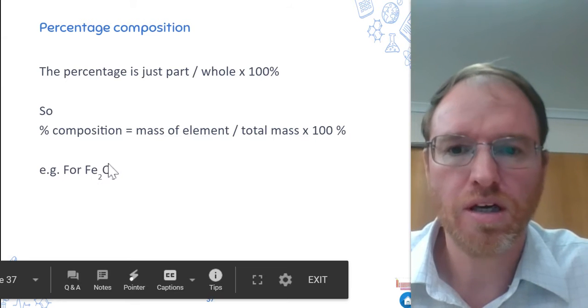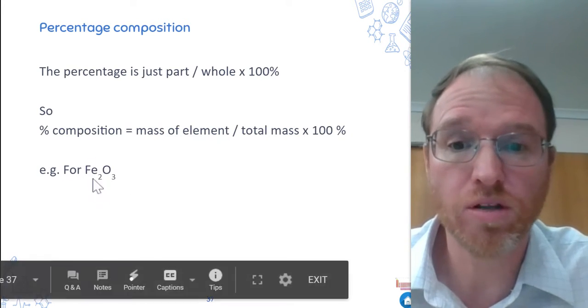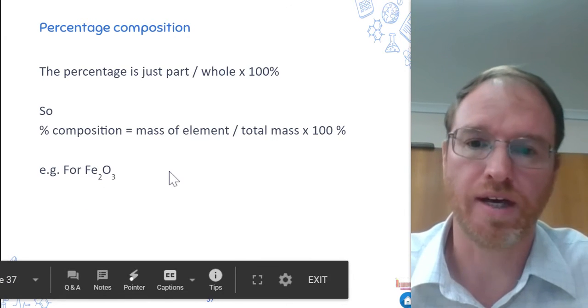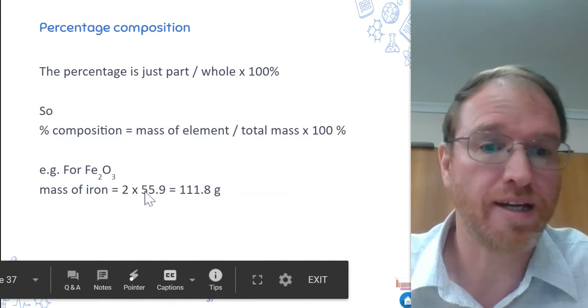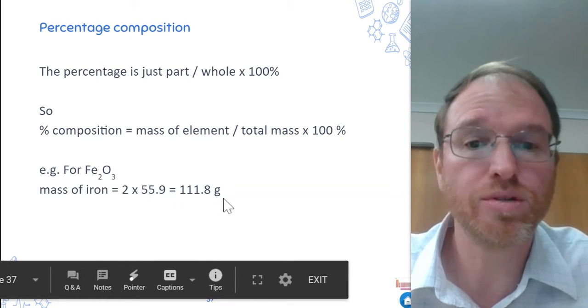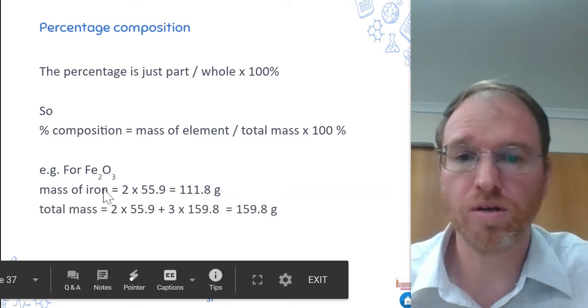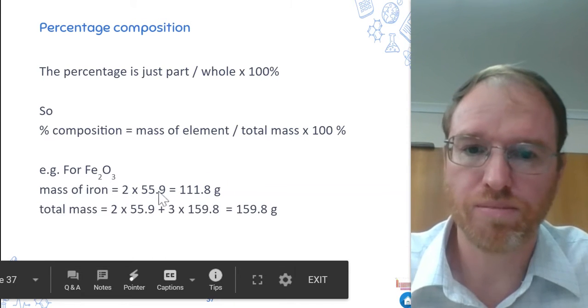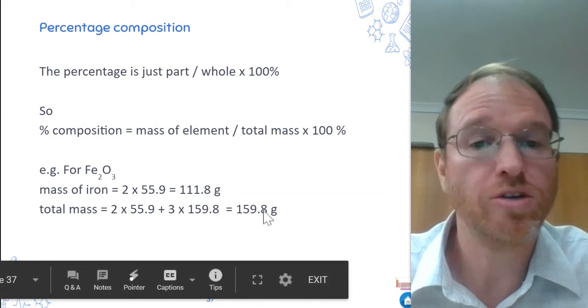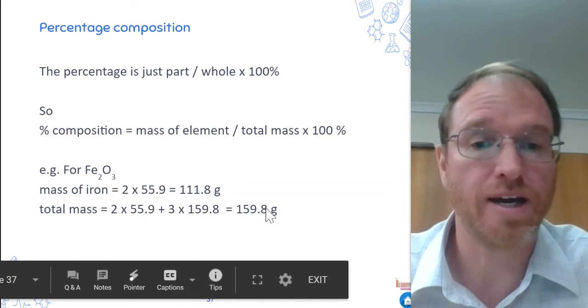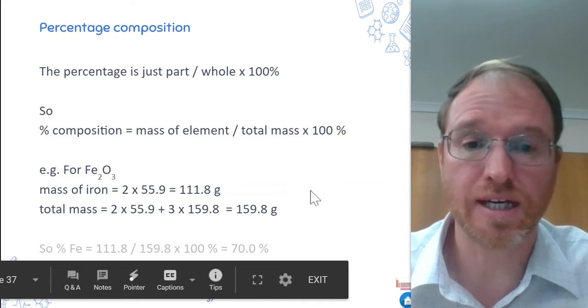So let's take Fe2O3. If you had one mole of that, you can work out the mass of iron in one mole of that, and you can work out the total molar mass of one mole of that. The iron, it's just two times 55.9. You look that up on the periodic table. So one mole of this would have 111.8 grams of iron. What's the total mass of one mole? Well, two times 55.9 plus three times 16, that should be three times 16 or 48, and you get 159.8 grams. So one mole of iron oxide is 159.8.